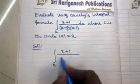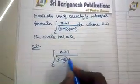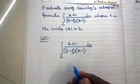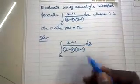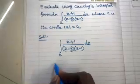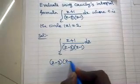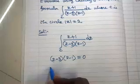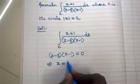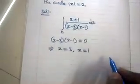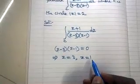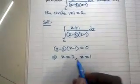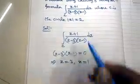The given integral is the integral over C of (z+1) divided by (z−3)(z−1) dz. To find the singular points, set the denominator equal to zero. So (z−3)(z−1) = 0, which gives z = 3 and z = 1. There are two singular points: 3 and 1.